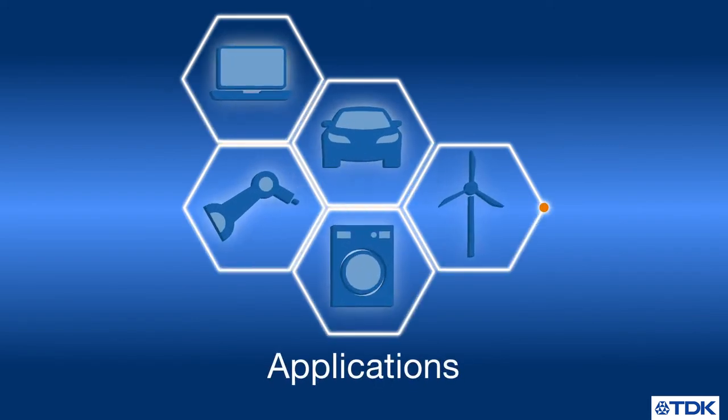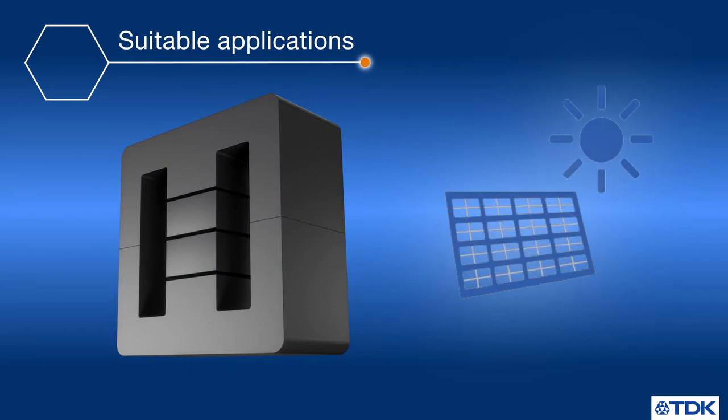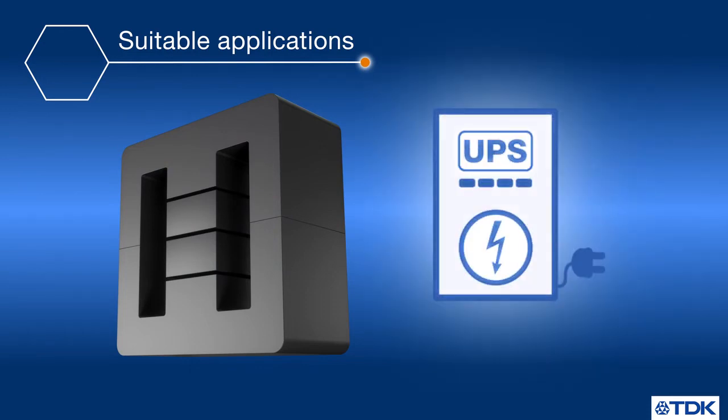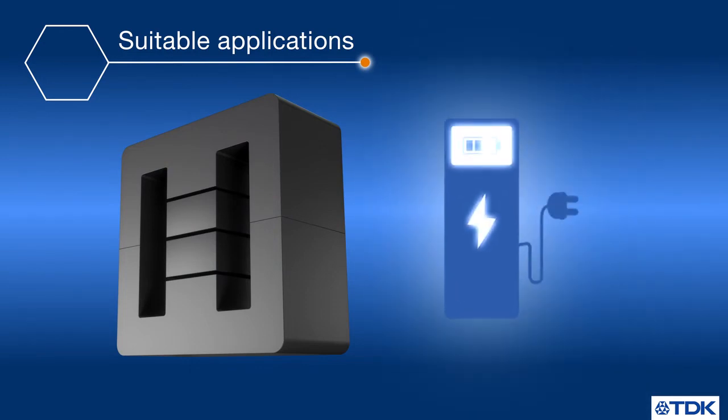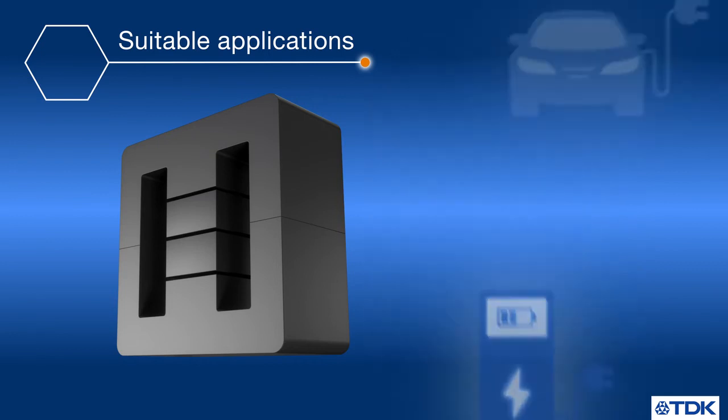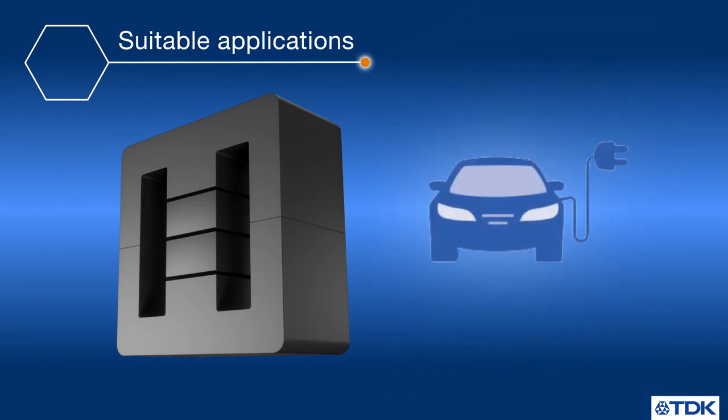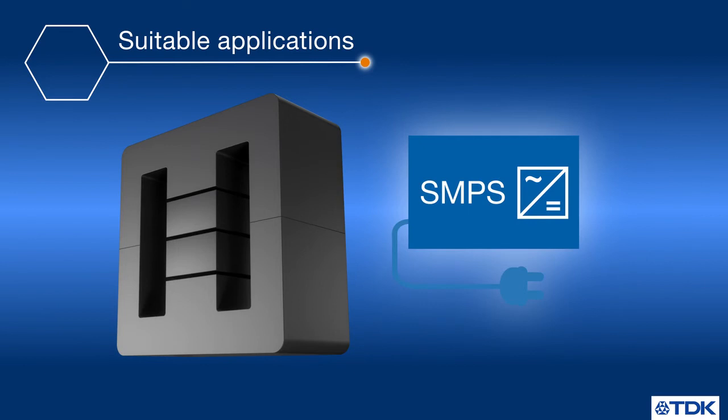Ferrite cores with distributed air gaps are suitable for many applications such as solar inverters, uninterruptible power supplies, EV charging stations, onboard chargers and DC-DC converters, industrial switch mode power supplies, and anywhere a large gap is present.